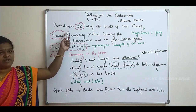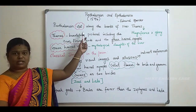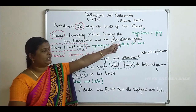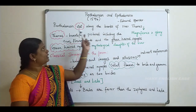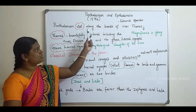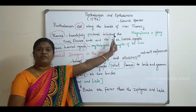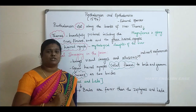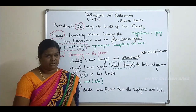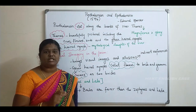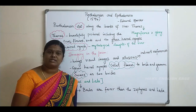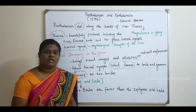Prothalamion's first setting is the river Thames. The poem is set along the banks of river Thames. Why is Thames river chosen? Thames is a river which is meant for magnificence and glory.